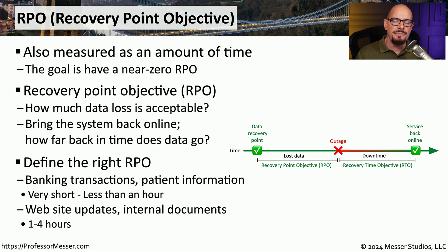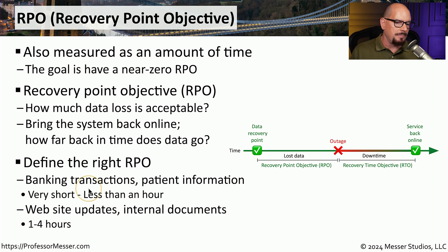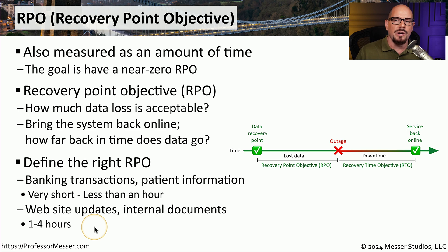The RPO may be different depending on the type of business you're in. For example, if your organization handles banking transactions or patient information, you want to be sure you don't lose a lot of that data, so you may put methods in place to ensure you're only losing a small amount of time — perhaps less than an hour. But maybe your organization works with other types of data that don't require such a short RPO. Updates to your website or internal documents may only be backed up every one or two hours, so there would be a longer RPO associated with that type of data.